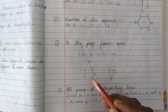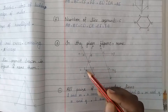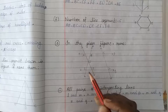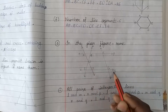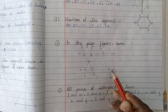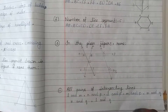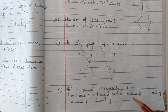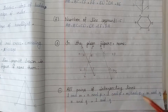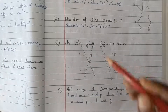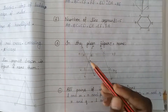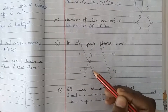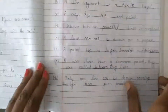Line MQ also intersects, giving pairs MQ and LQ. So the total intersecting line pairs are: LM, LP, MP, MQ, LQ — that is 1, 2, 3, 4, 5, 6, and 7 pairs of intersecting lines.